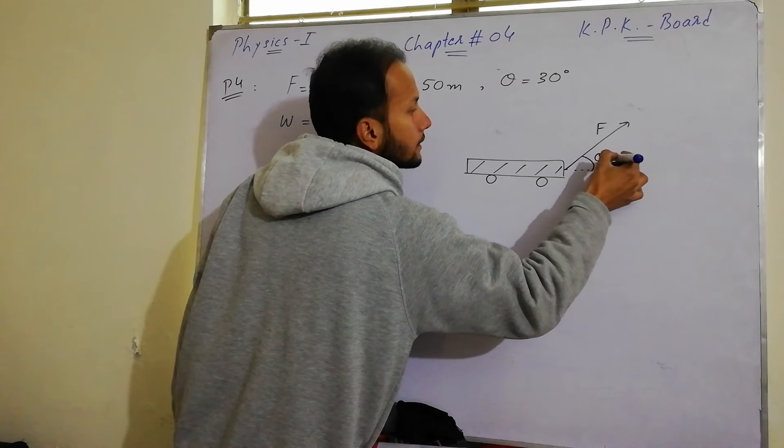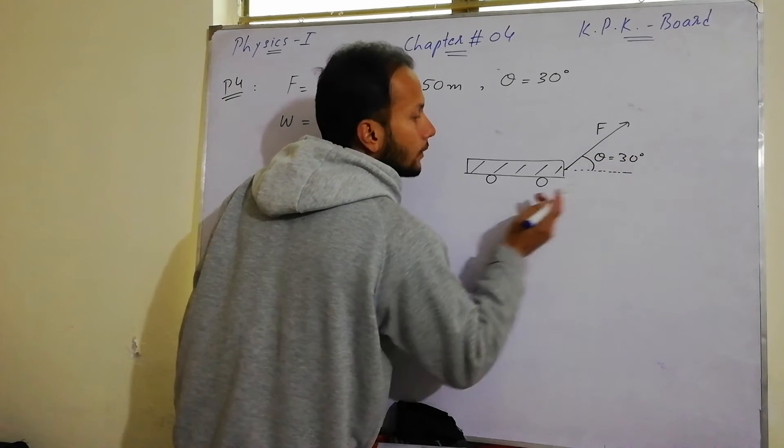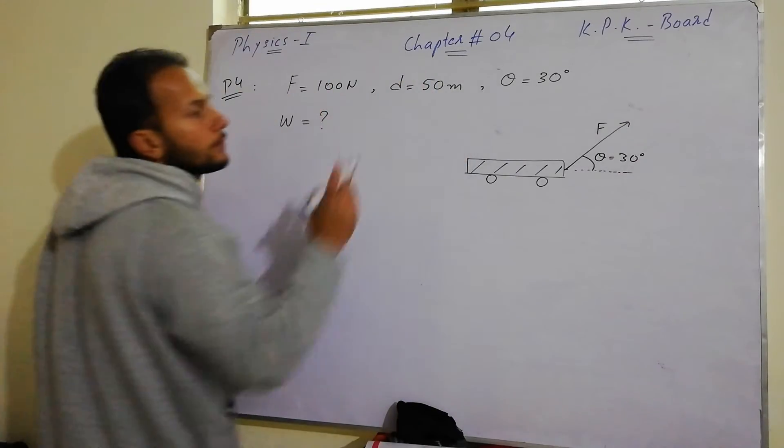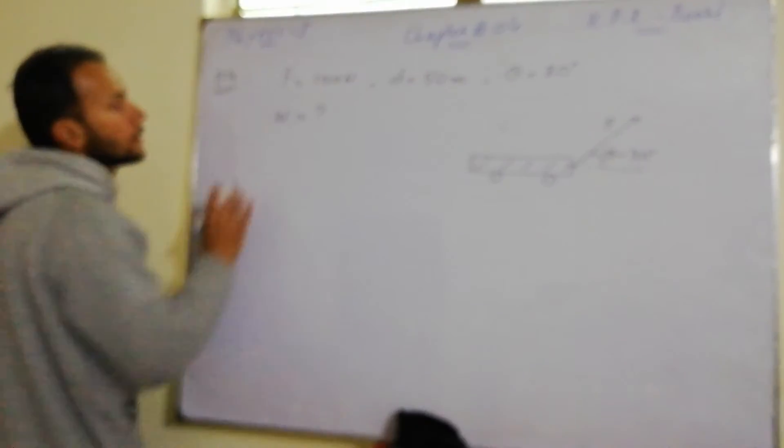Theta angle is 30 degree and this trolley moves a distance of 50 meters. So work done, what will be the work done?